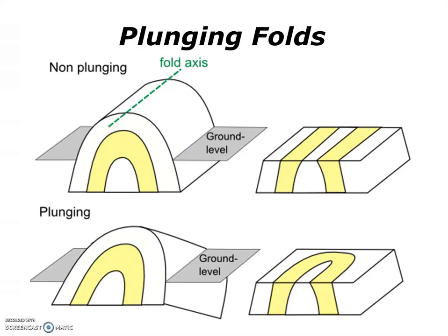Not all folds are non-plunging. Note that the top fold on this image is non-plunging, like those that we've seen in previous slides, and the eroded surface will produce parallel outcrops. In the case of a plunging fold, as those seen on the bottom of this image, the fold axis is no longer horizontal. As this type of fold is eroded, rather than parallel outcrops, the pattern we will see will be a U shape. In this case, this is a plunging anticline, although synclines can also be plunging and form similar outcrop patterns.